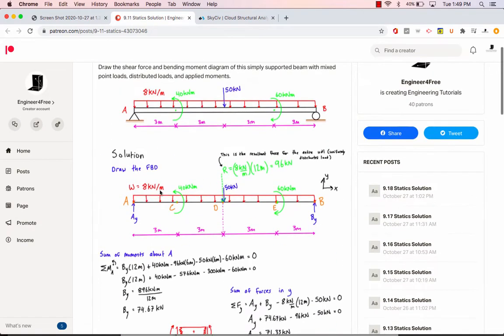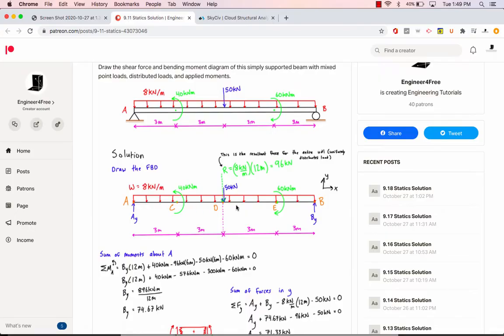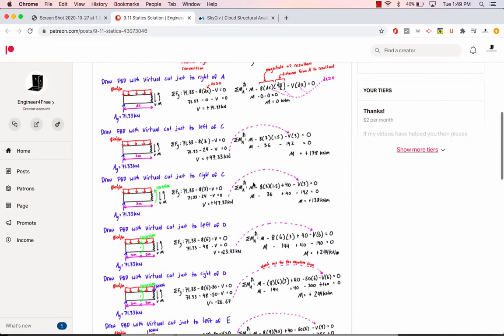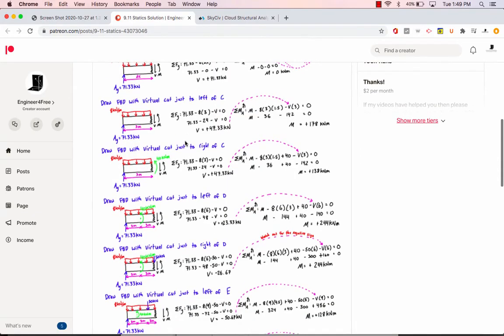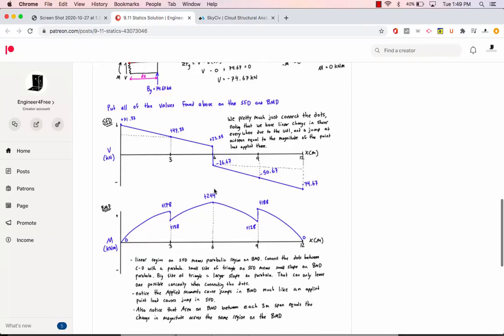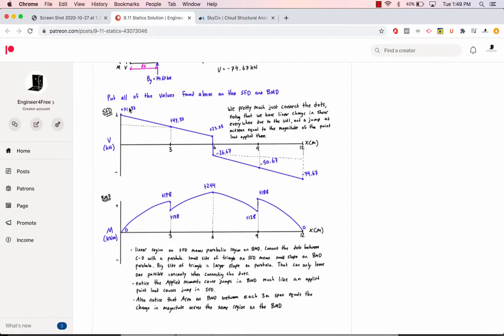Then calculate what the shear and the moment are at those points. You can see we had points A, C, D, E, and B. Without getting into all the details, it took a lot of calculations to get all of these different points, tons of calculations. Then at the end, ultimately we are able to plot all of those on the shear force diagram and bending moment diagram.